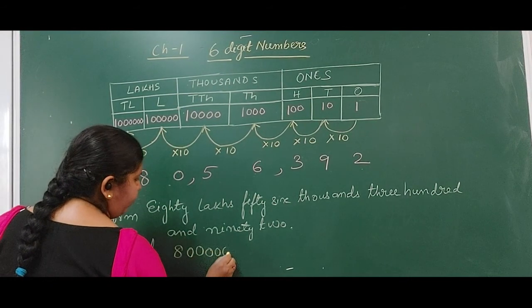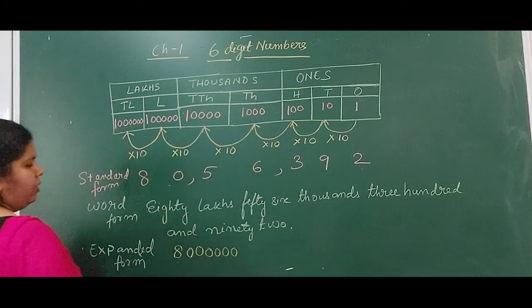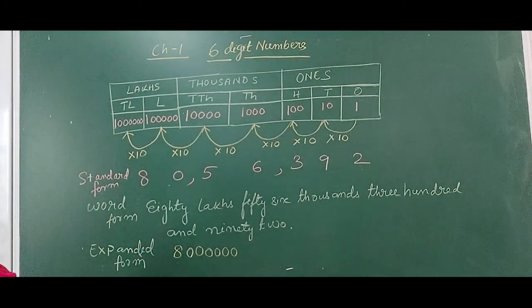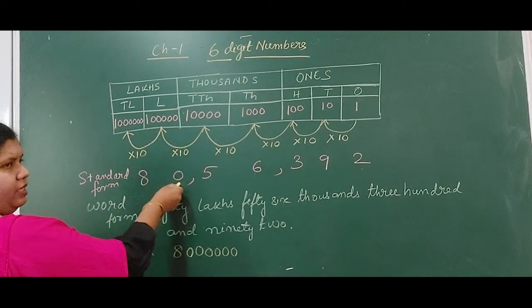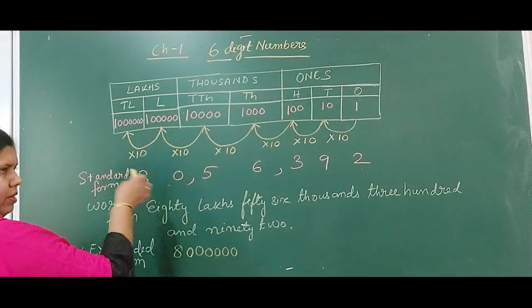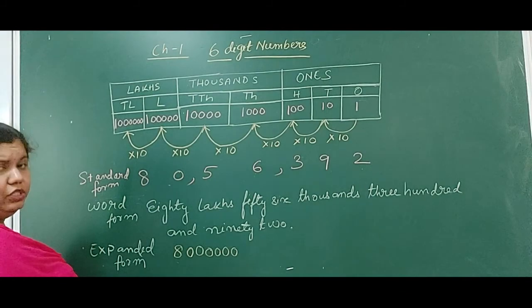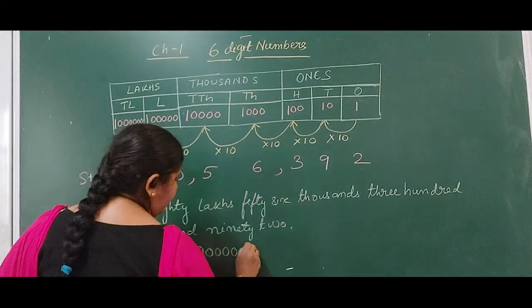Count 1, 2, 3, 4, 5, 6. So this is your 80 lakhs. In the next place there is no digit, it is 0 as the digit here, so plus 0.